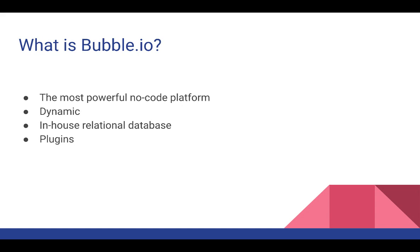Bubble also has an in-house relational database for every application you build on it. This is great because you don't need to focus on building a database outside of Bubble, integrating it, scaling it, and everything required with starting up a database. You don't have to use the Bubble database — you can use something like Amazon Web Services with the API connector — but for about 99% of use cases, we recommend sticking with the Bubble in-house database.